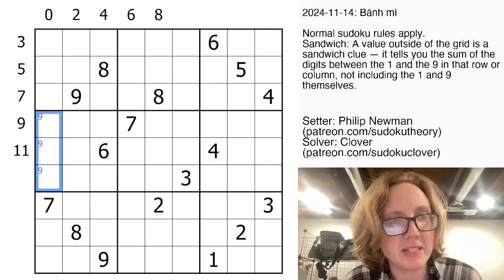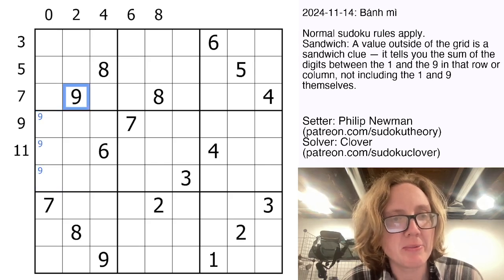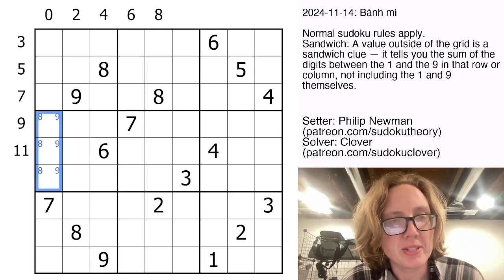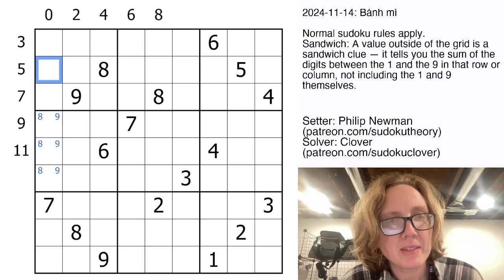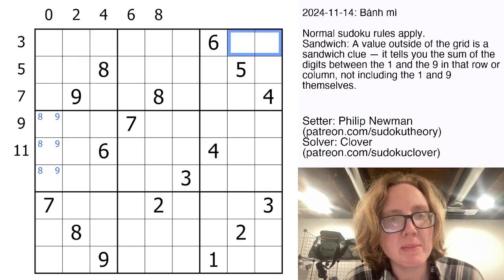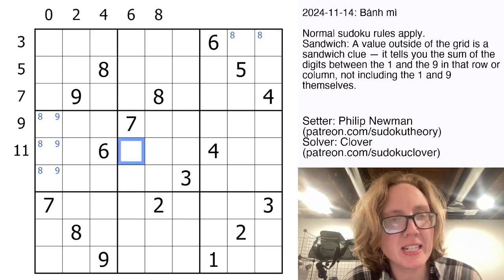So in this column, the nine has to be here because we have nines here and here. And the eight is also going to have to be here. Now it's going to be in one of these cells, just trying to get the lay of the land here, kind of get the feel of this puzzle.